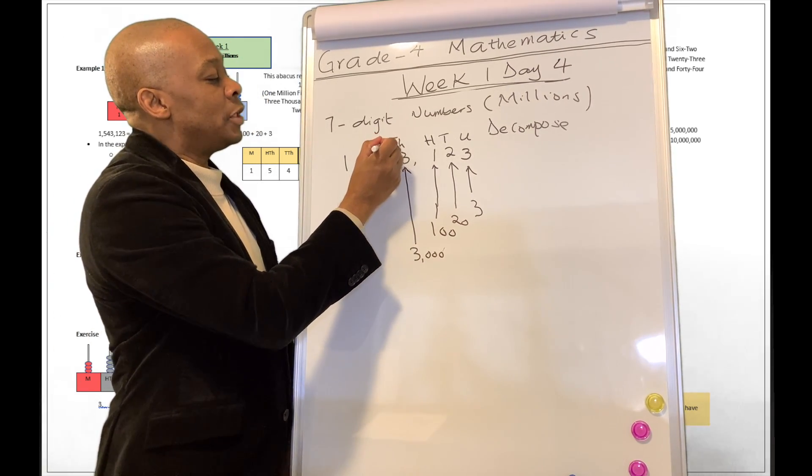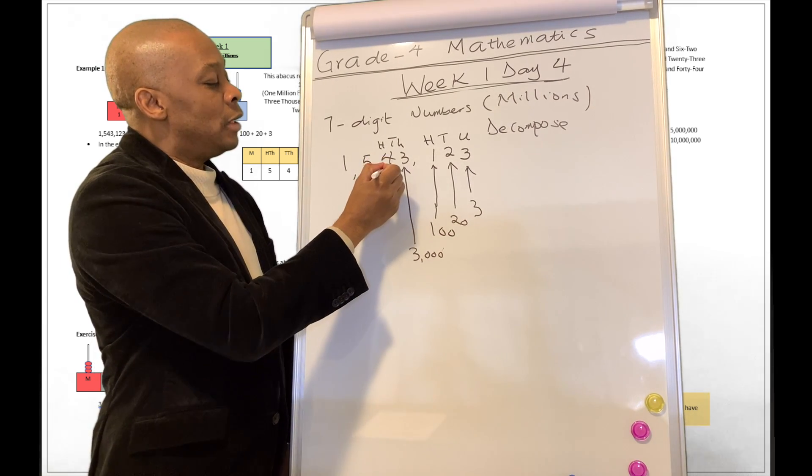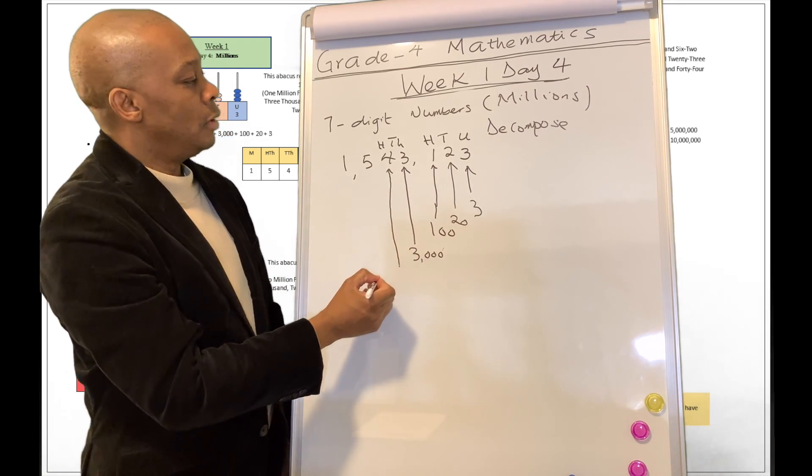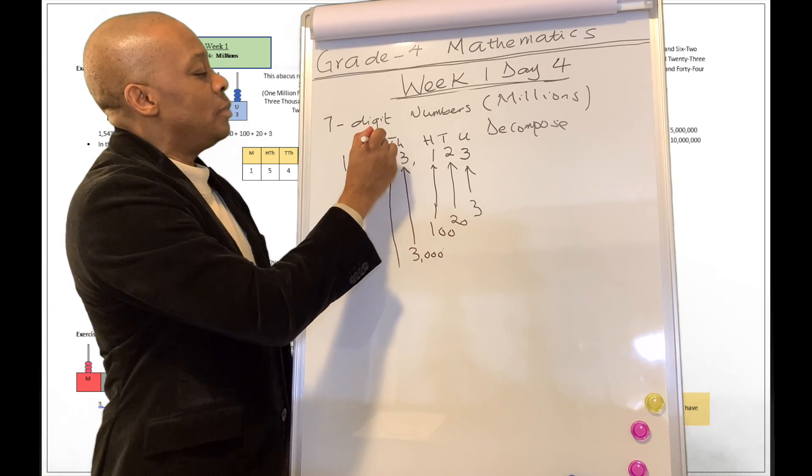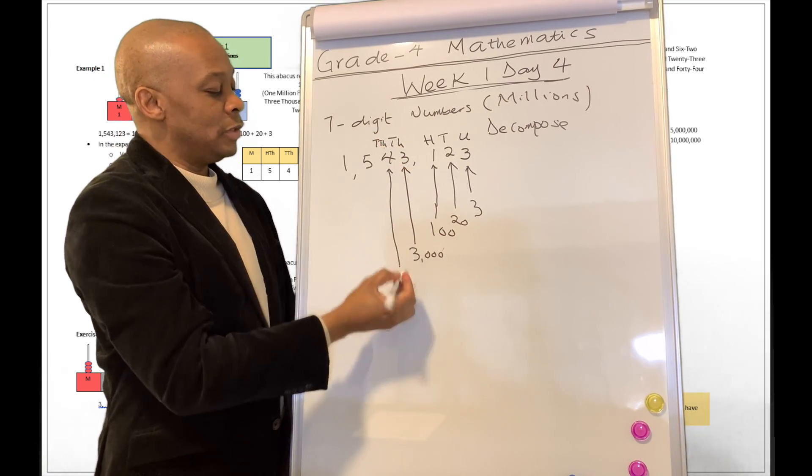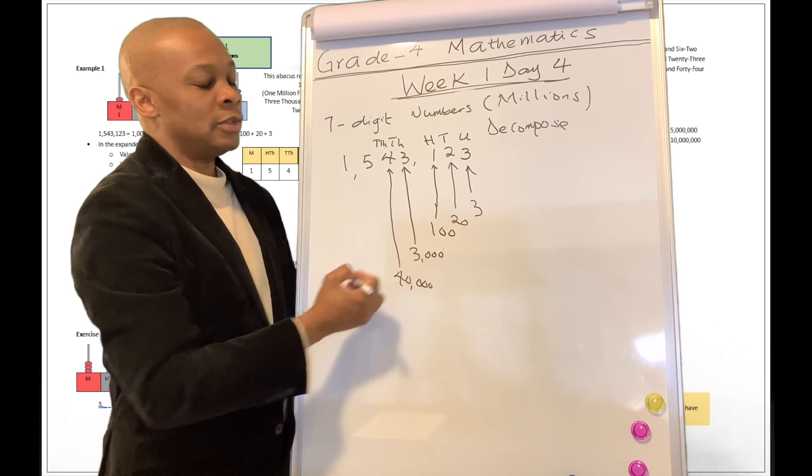Now, what about this column over here? This column represents, sorry, pardon me. It's going to be in the 10s of 1000s. Pardon me. So 4 is going to represent 40,000.